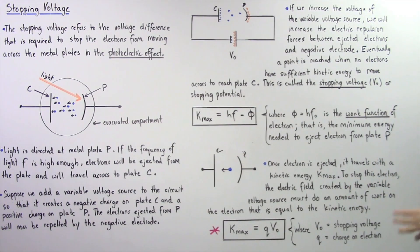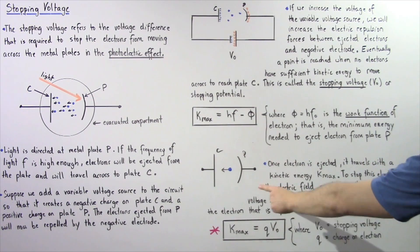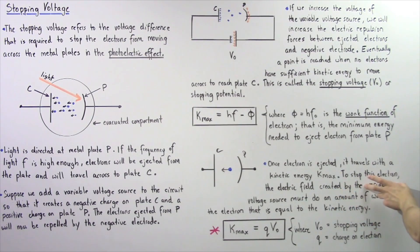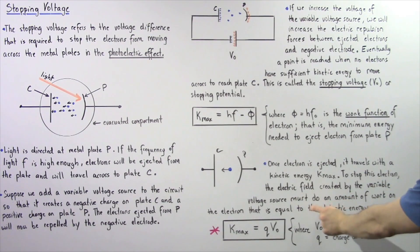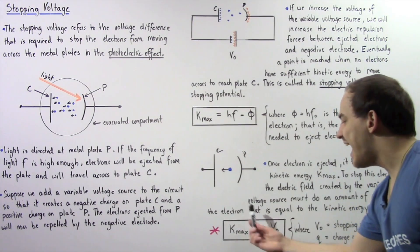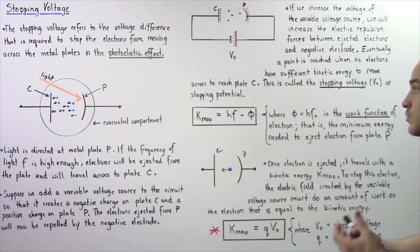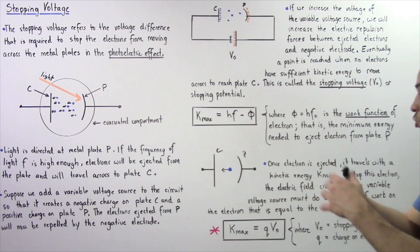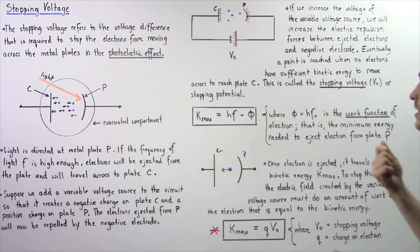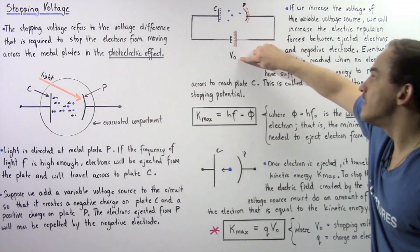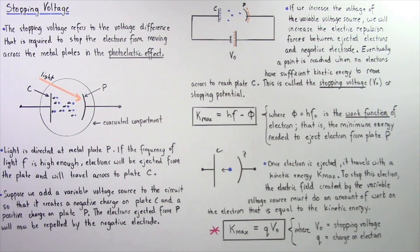Now, to fully stop this electron, the electric field created by the variable voltage source, as shown in this diagram, must do an amount of work on the electron that is equal to the kinetic energy. So basically, the kinetic energy that our electron has as it travels across, Kmax, is equal to the work done by that electric force created by this voltage source, V0.